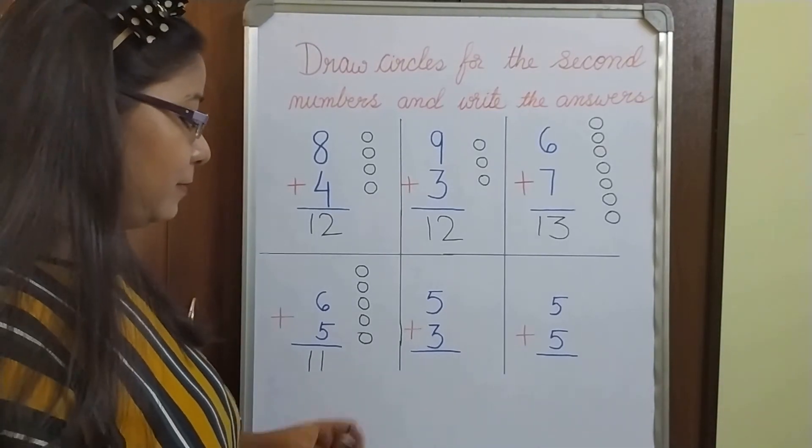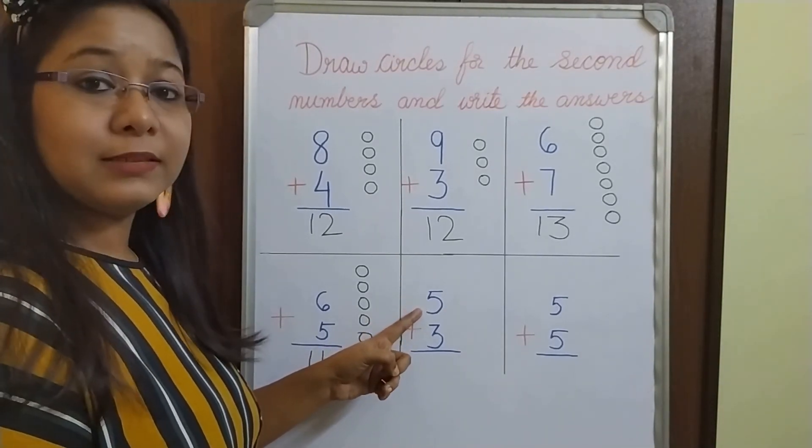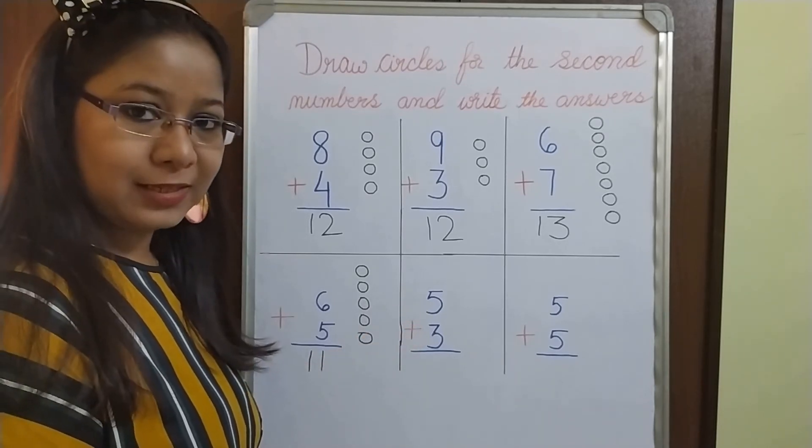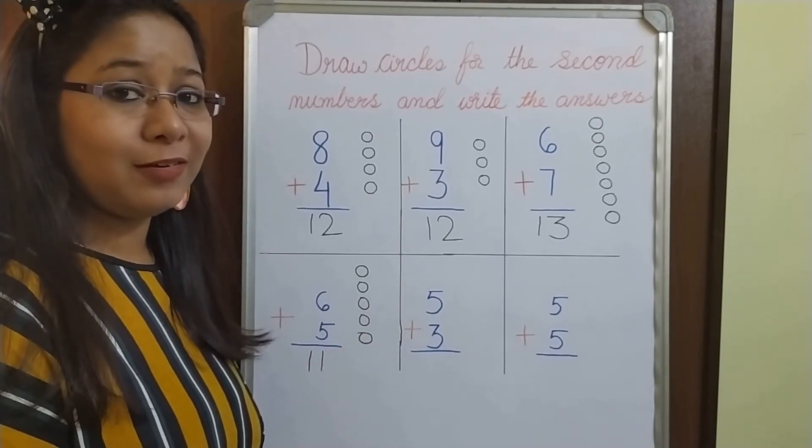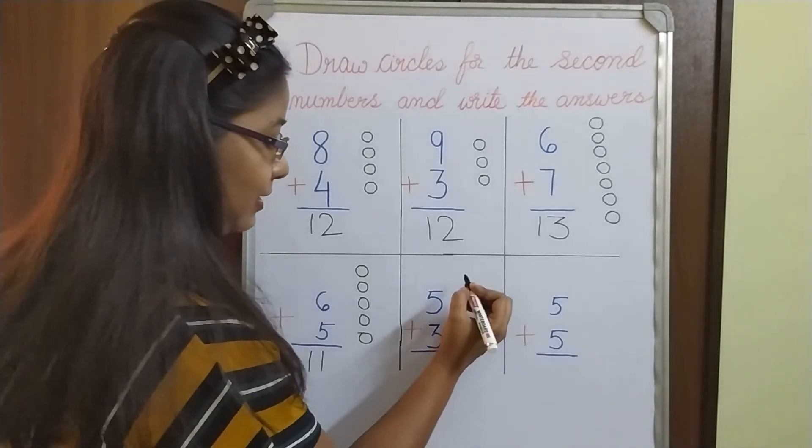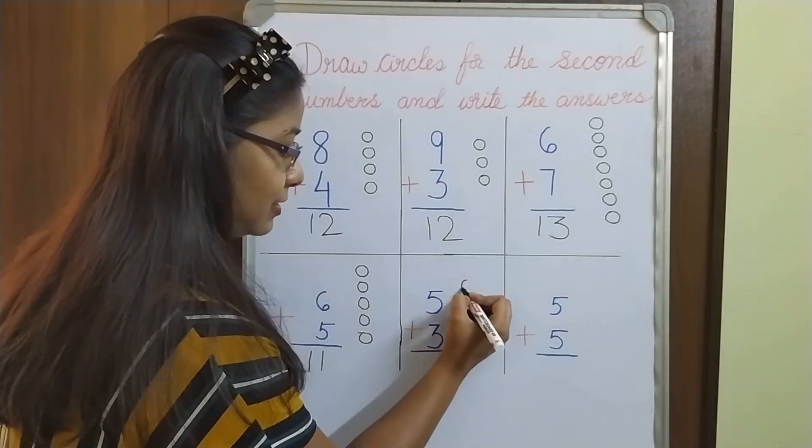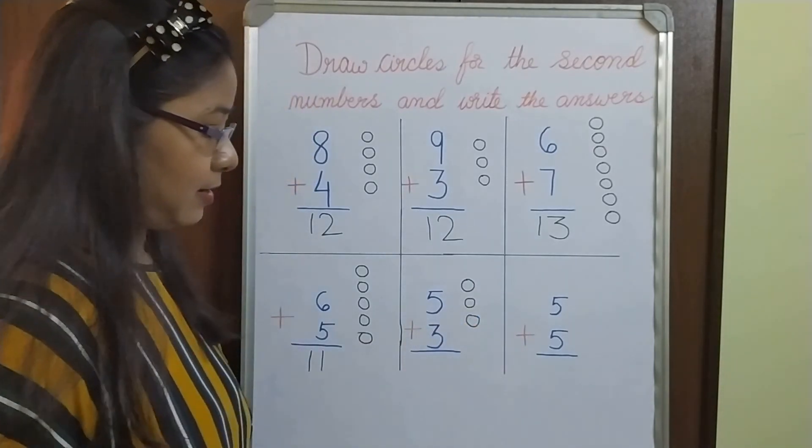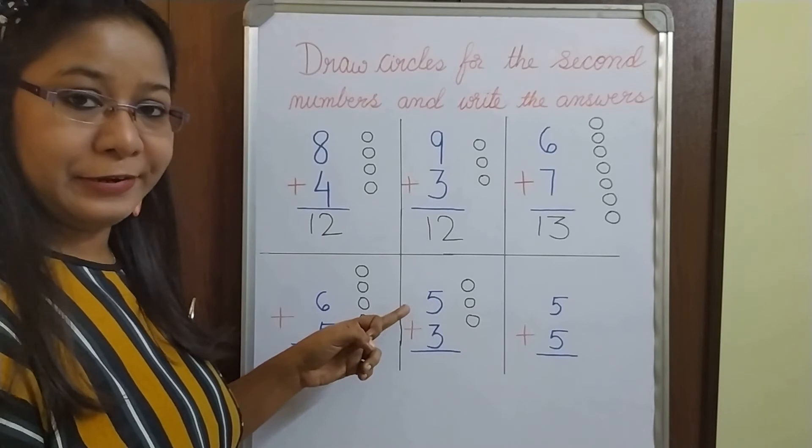Let's do the other one. Here the first number is 5. And the second number is 3. So which one we have to draw? Right. Number 3 circles. So 3 circles will count. 1, 2, 3 circles. Right. And now it's time for addition.